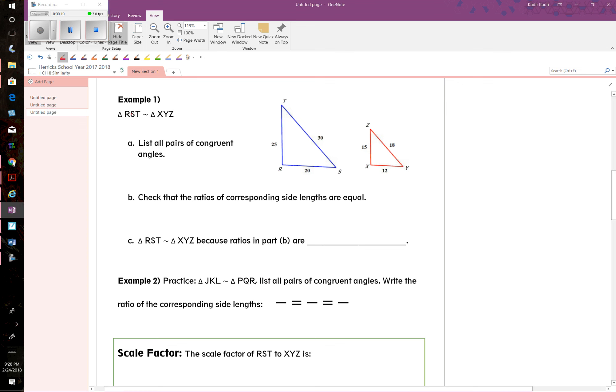If you look at the name, the first position is angle R in the first one, and in the other triangle, angle X is in the first position, so they correspond and are congruent. In the second position, we have angle S, which is going to be congruent to angle Y, which is also in the second position.